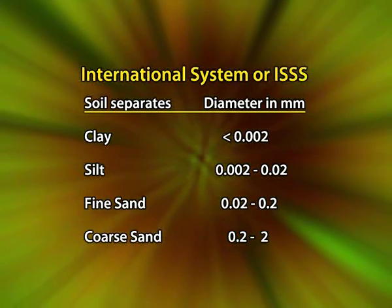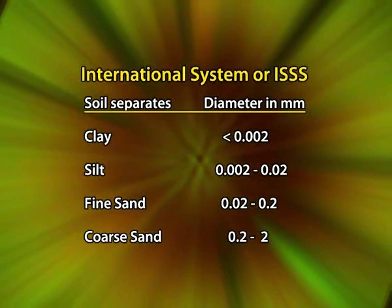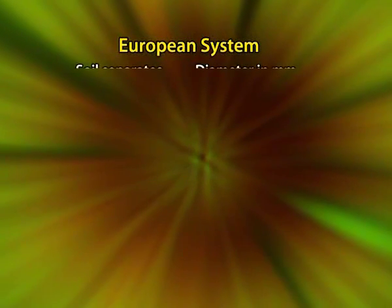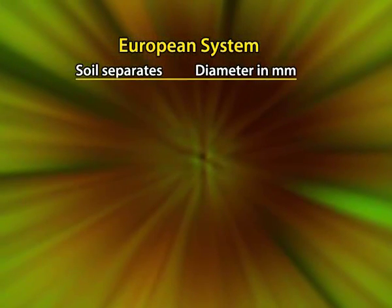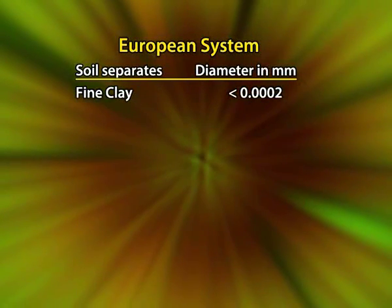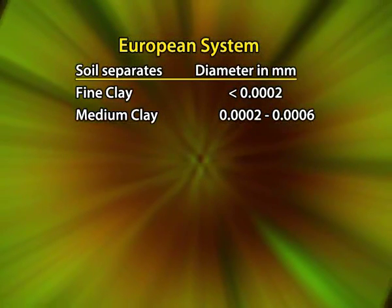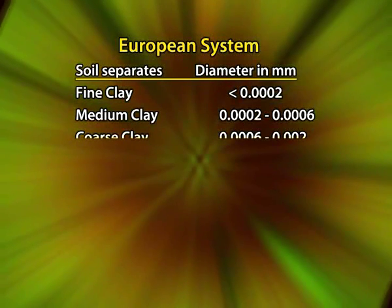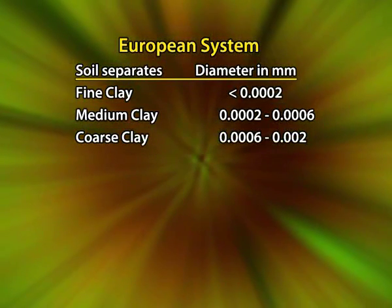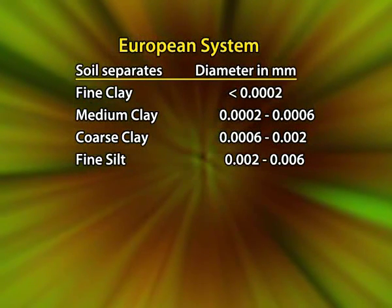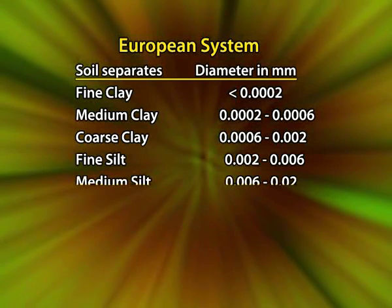According to the European system, the particle size range of various soil separates is: fine clay less than 0.0002 mm diameter, medium clay 0.0002 to 0.0006 mm, coarse clay 0.0006 to 0.002 mm, and fine silt 0.002 to 0.006 mm diameter.